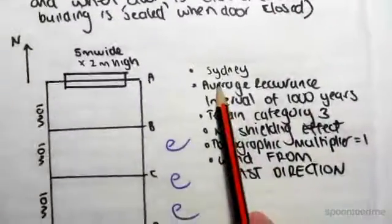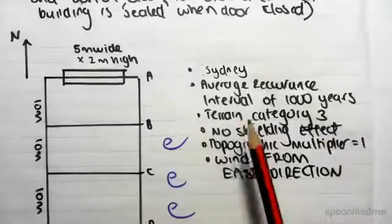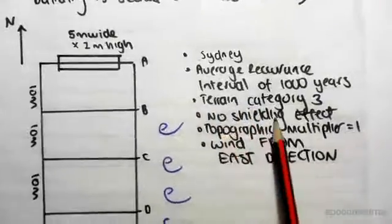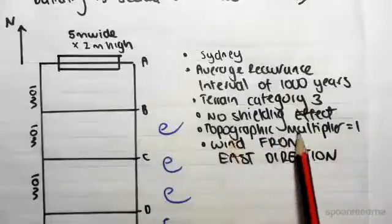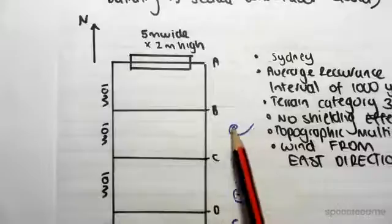The building is located in Sydney with an average recurrence interval of a thousand years. The terrain category is three, there's no shielding effect, the topographic multiplier is one, and the wind is coming from the east direction.